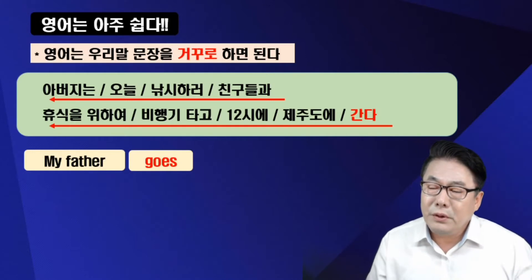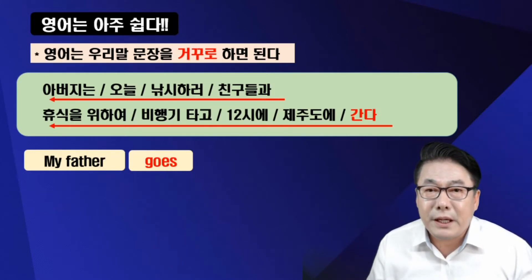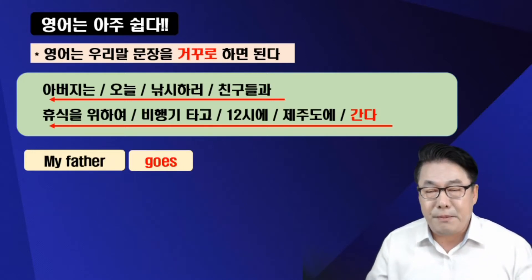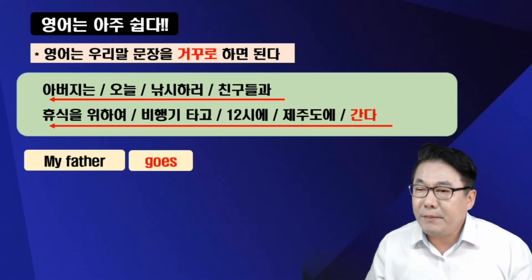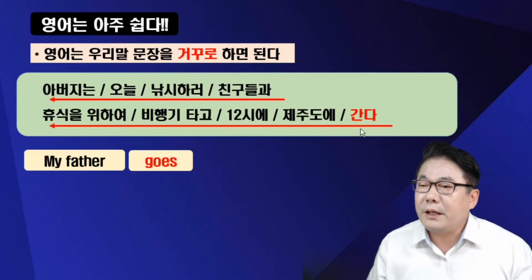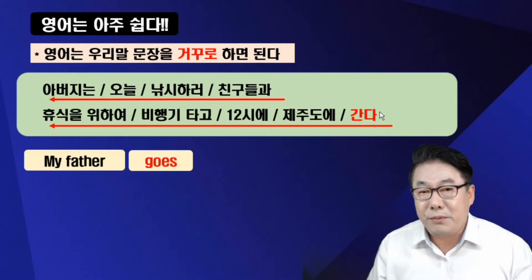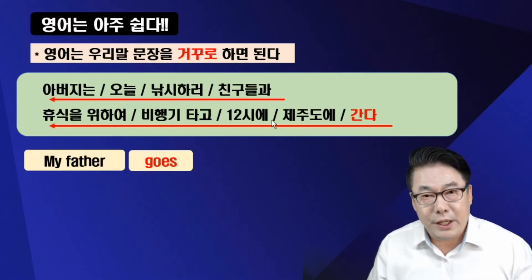자, my father go. 미국 사람들은 goes까지 안 들립니다. 그냥 go 합니다. my father go. 그 다음에 간다 했으니까, 끝에서부터 올라오니까, 그 다음에 뭘 말해야 될까요? 제주도에라고 하시겠죠? 틀렸습니다.